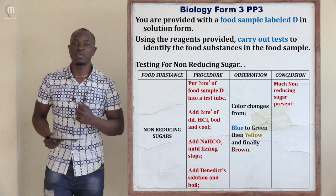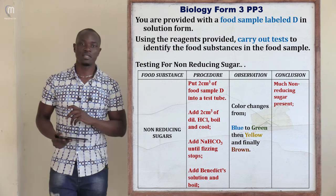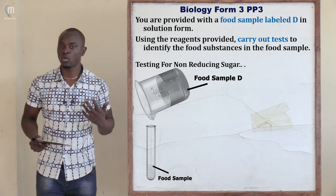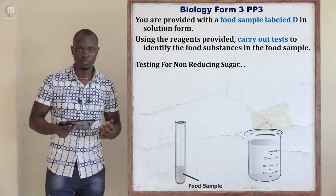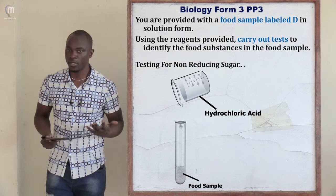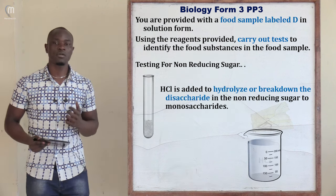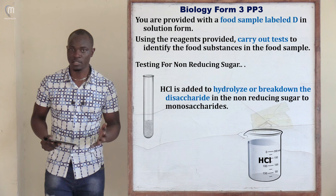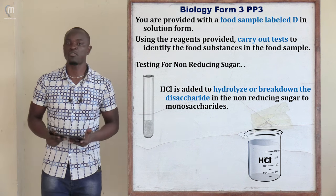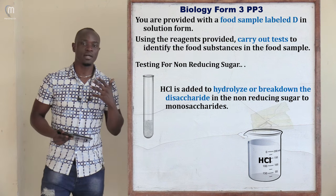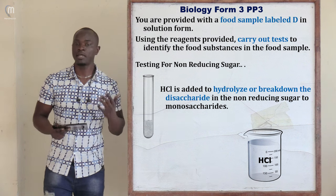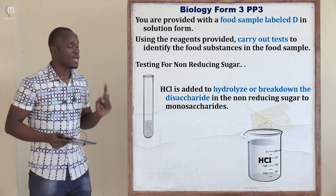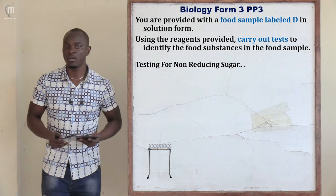The next test is for non-reducing sugar. Put 2 ml of food sample D in a clean test tube, then add 2 ml of hydrochloric acid. We add hydrochloric acid to hydrolyze or break down the disaccharide into different monosaccharides — a subtopic studied in Form 1 under nutrition in plants and animals. Dilute hydrochloric acid hydrolyzes the disaccharide into monosaccharides.